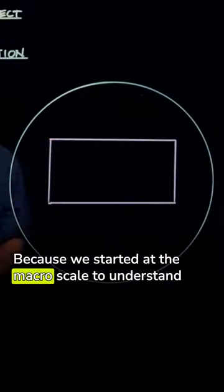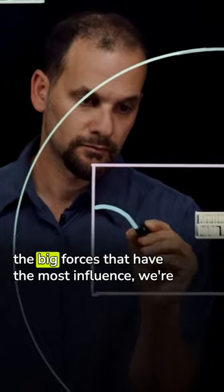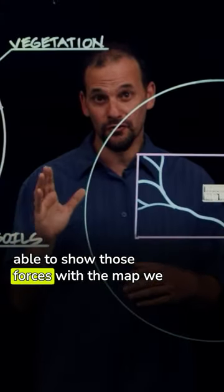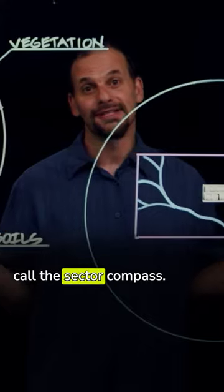Because we started at the macro scale to understand the big forces that have the most influence, we're able to show those forces with a map we call the sector compass.